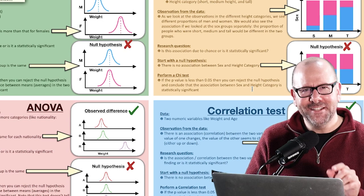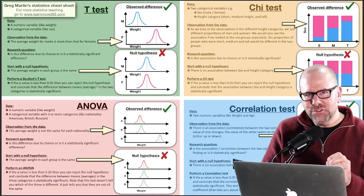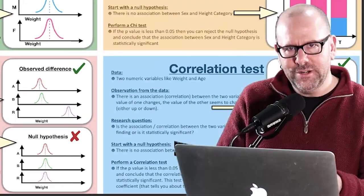When it comes to stats, if you can understand the basics and get these statistical tests nailed down, the more complicated stuff comes very easily. This cheat sheet gives you the basics for t-test, chi-squared test, ANOVA, and correlation test.